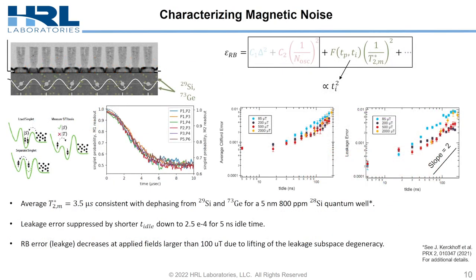Lastly, we do have magnetic noise in these devices despite some isotopic purification. We can do standard T2* measurements, and we observe a coherence time of 3.5 microseconds that we believe are due to residual nuclear spins in the device. We can emulate this in randomized benchmarking by sweeping the idle time between our pulses, and indeed at long idle times our RB error tracks closely with our leakage error. This shows a nice way to reduce the amount of leakage error we have in the device — just idle less.